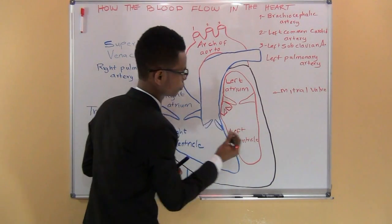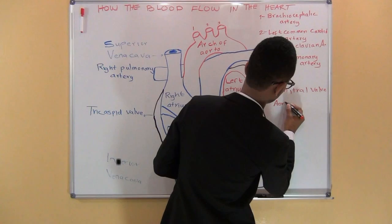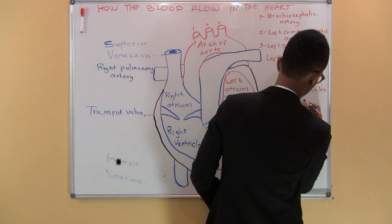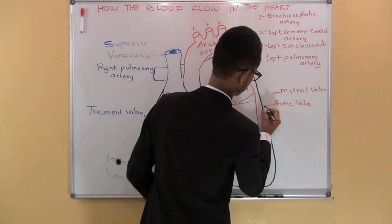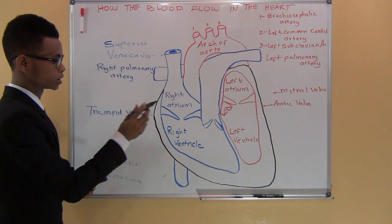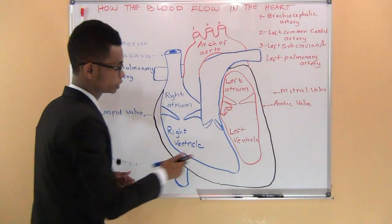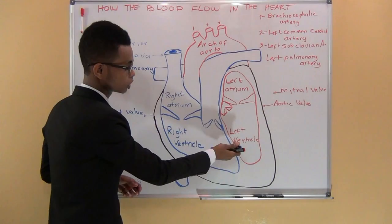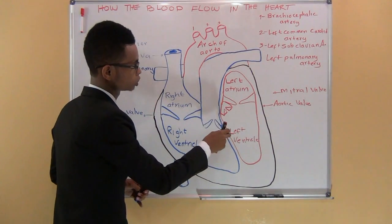The aortic valve is located between the left ventricle and the aorta. The aortic valve controls blood flow from the left ventricle to the body.